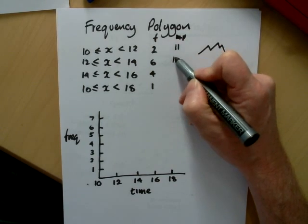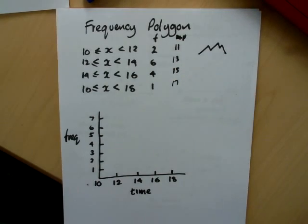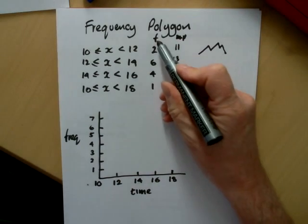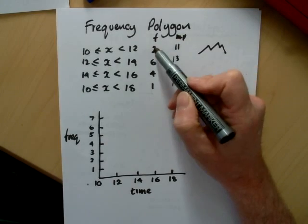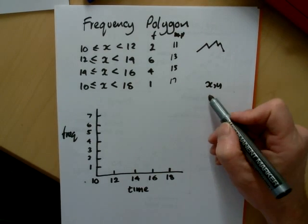We've got 11, 13, 15 and 17. And you need to be careful here because we plot coordinates x, y. At the moment your x coordinate is your midpoint and your y is your frequencies. They're sort of the wrong way around. But as long as you're comfortable with that,